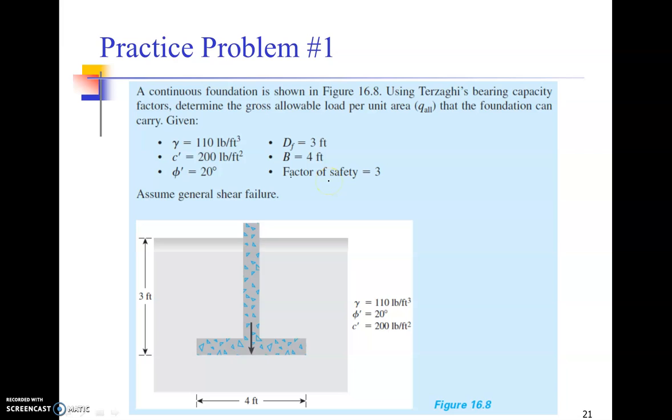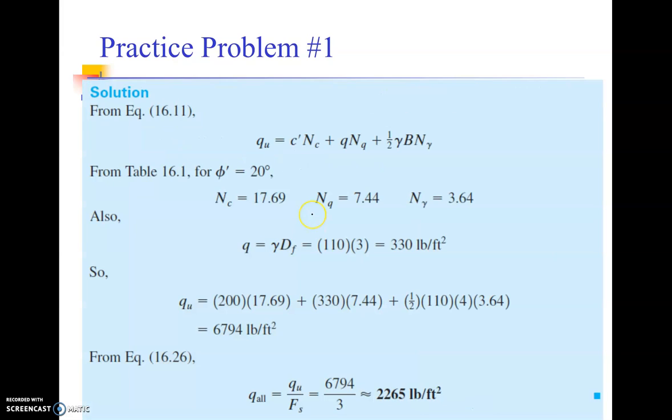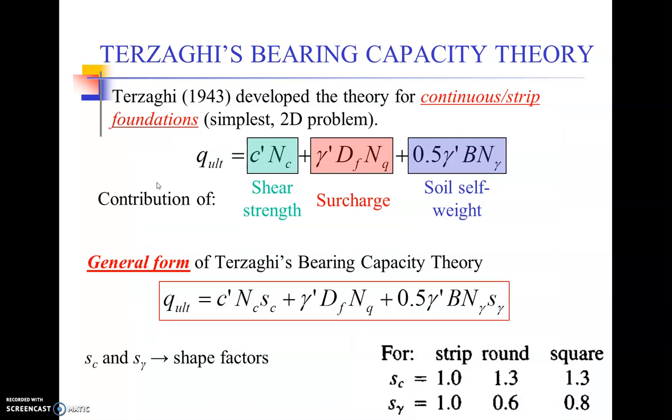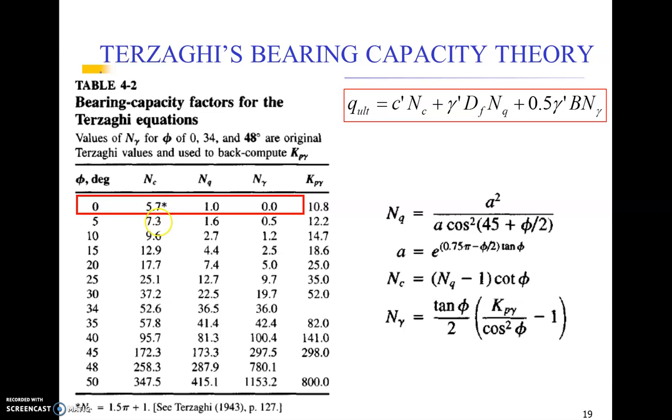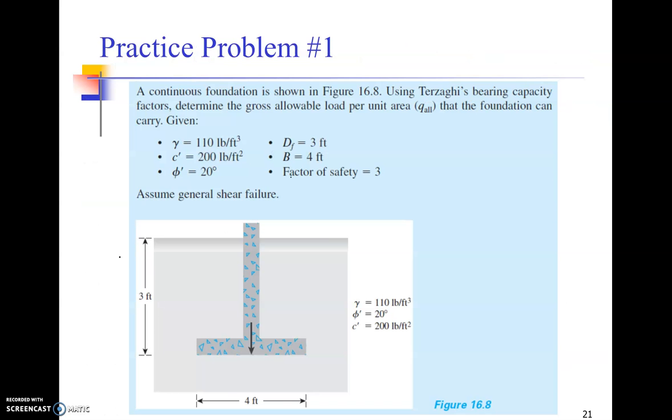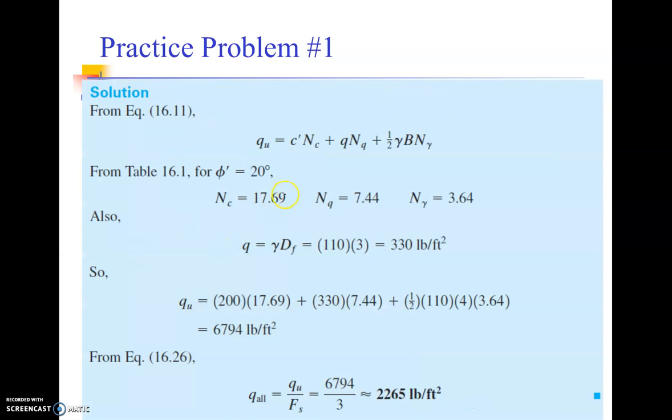The factor of safety is three. Assuming general shear failure would occur, we'll use the Terzaghi's equation. From table 16.1 that we saw previously, I'm talking about this table, corresponding to 20 degrees you can see 17.7, 7.4, and 5 are the Nc, Nq, and N gamma values. Here are the values, so you can get these values directly. Q is gamma Df in this formula.